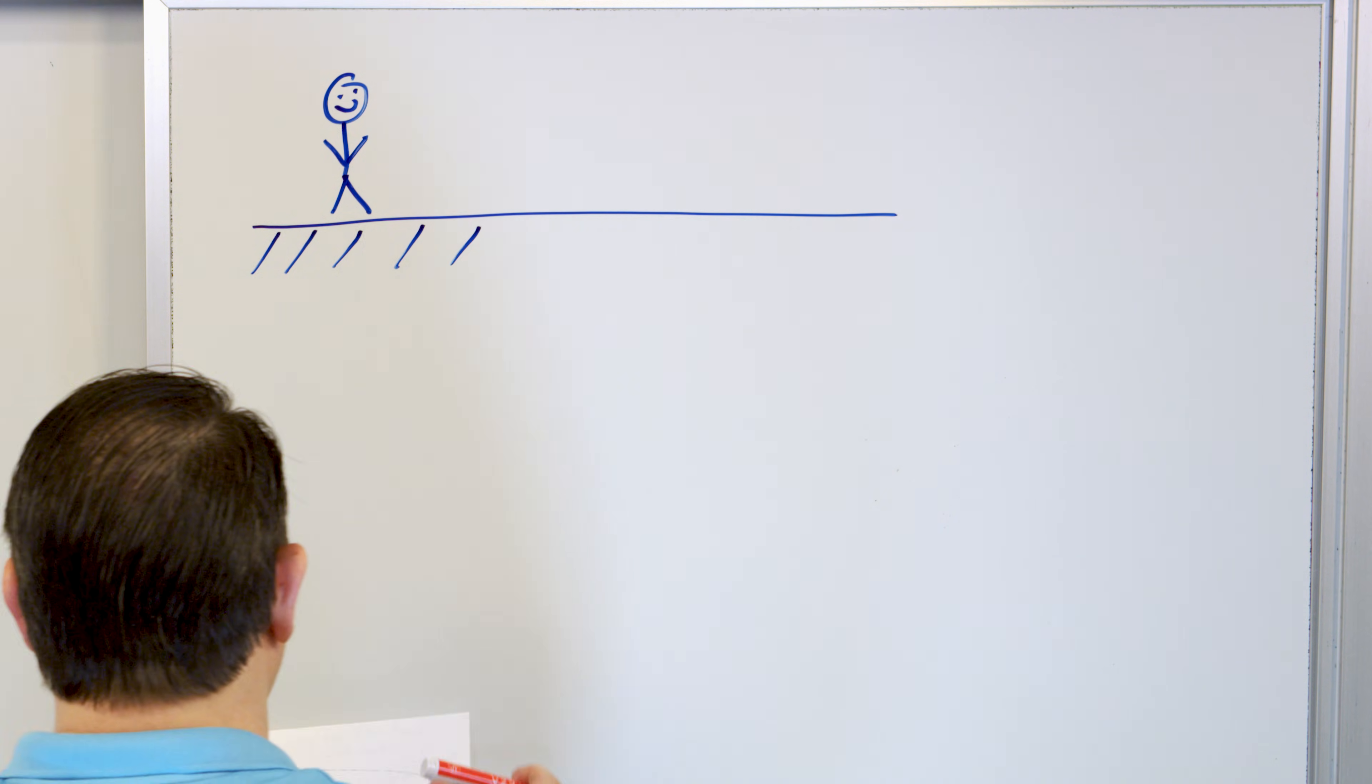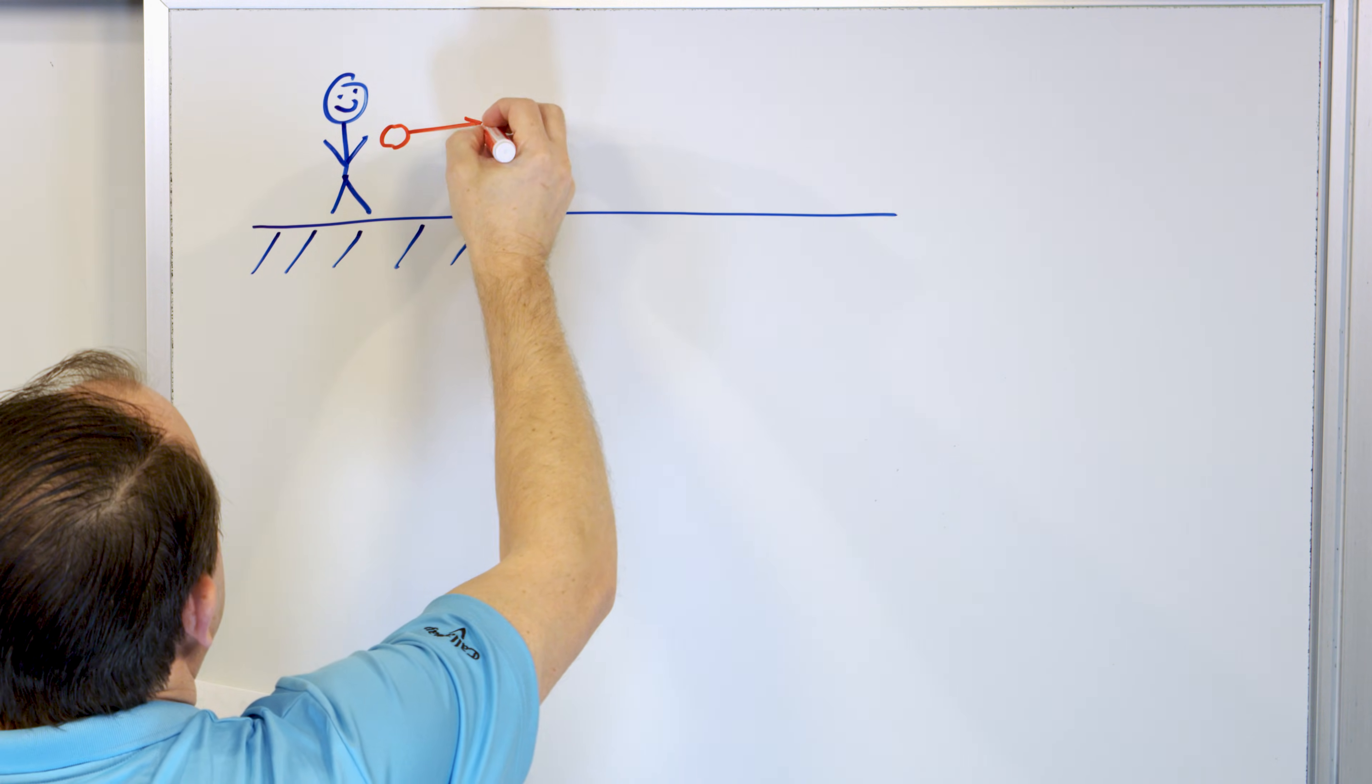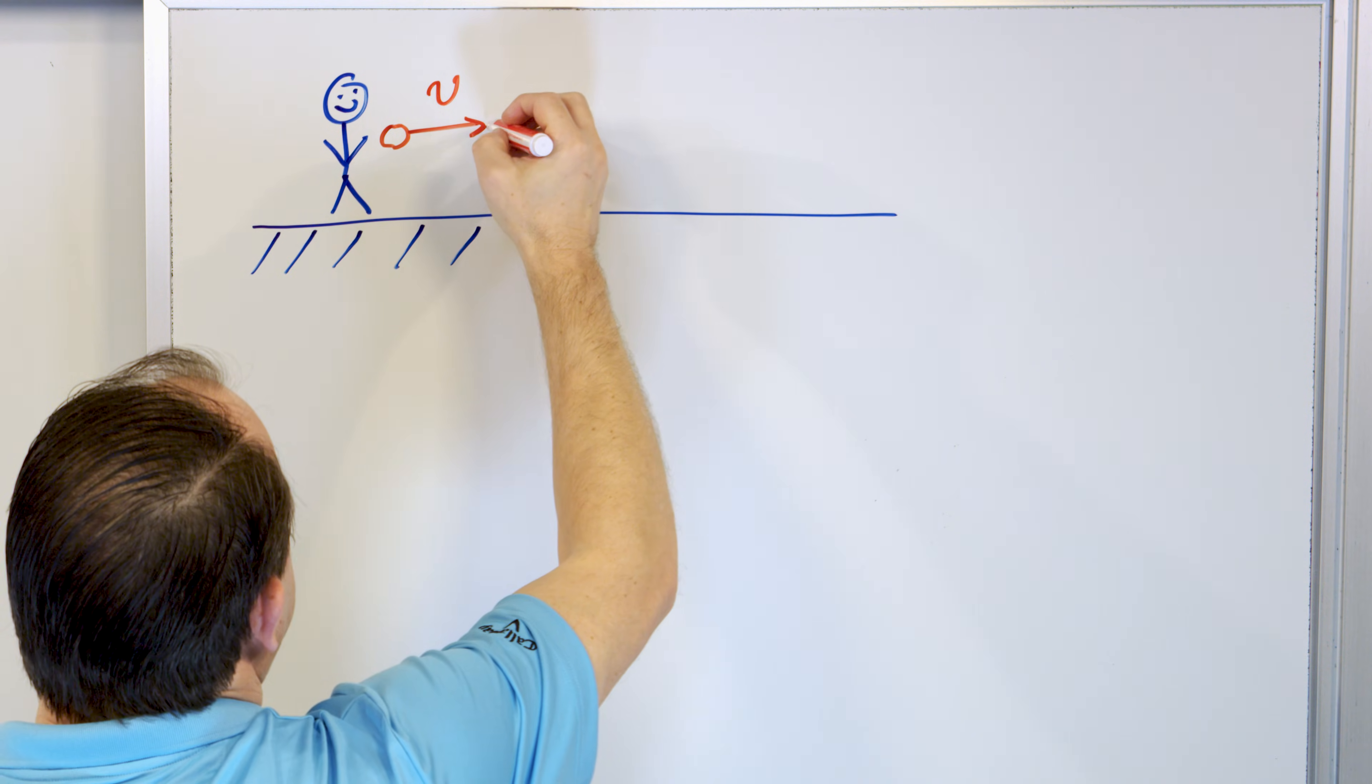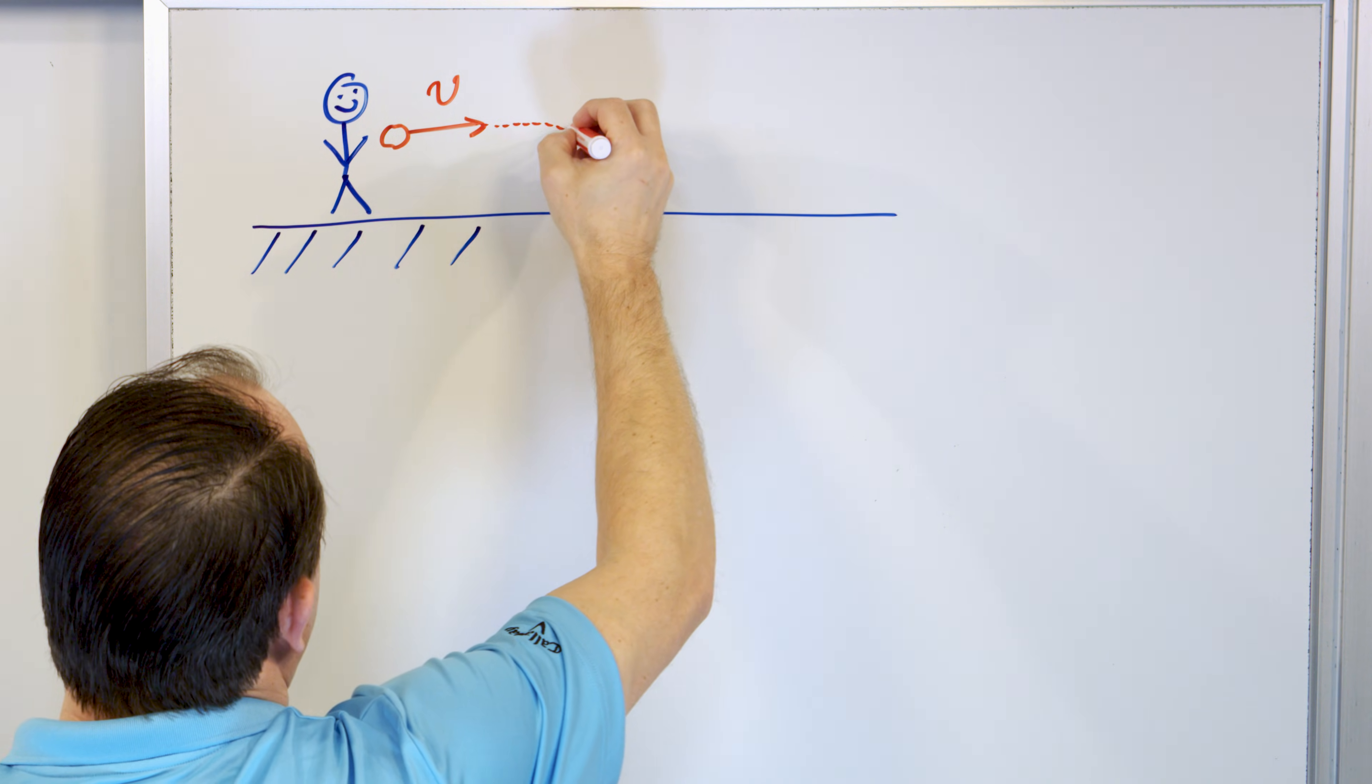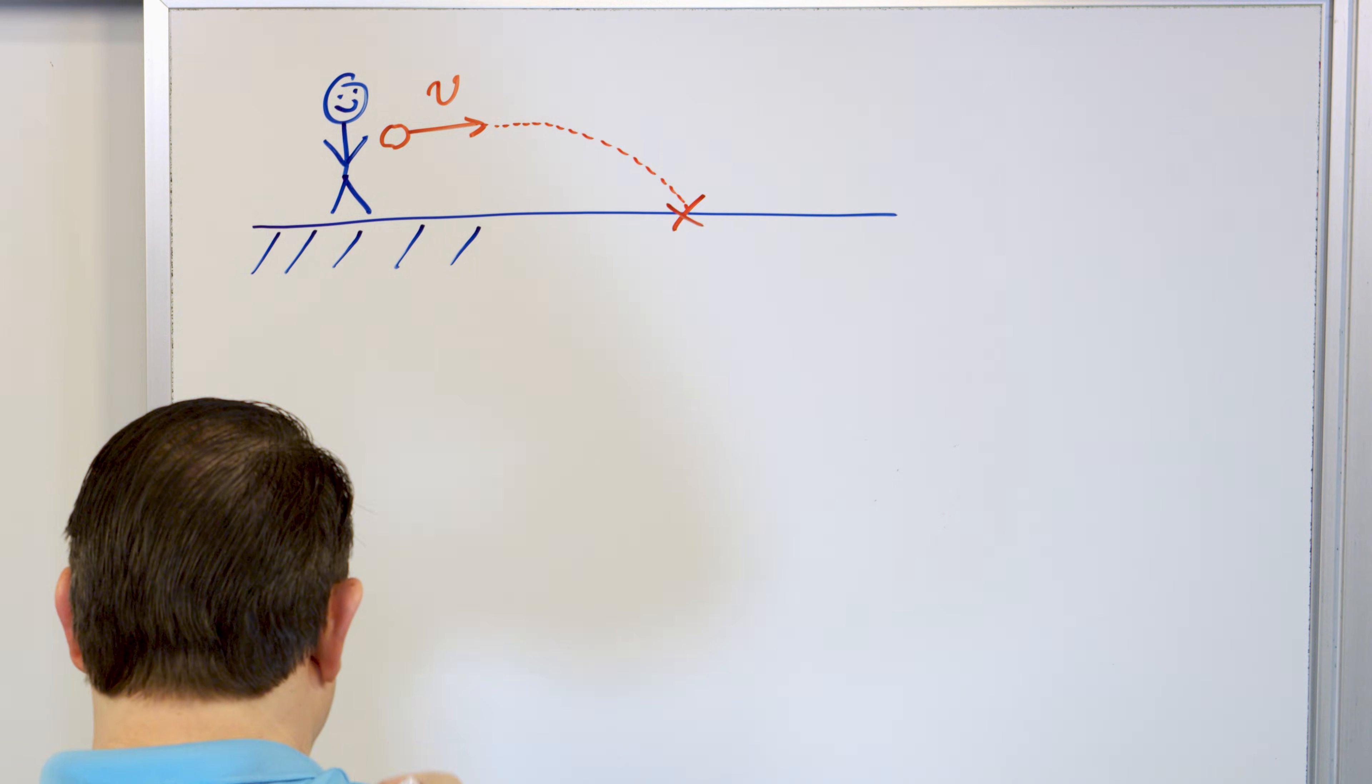And what you're going to do is you're going to throw some rock. So here is a rock here you're holding and you launch it horizontally with some speed V. What is going to happen to this rock? Well, it's going to go horizontally for a while, then the gravity is going to pull it. It's going to hit the ground and it'll hit the ground. Let's call it right there.